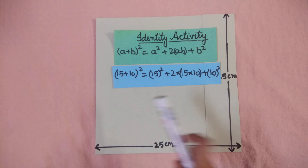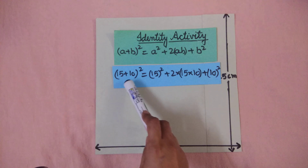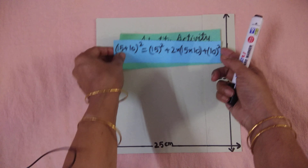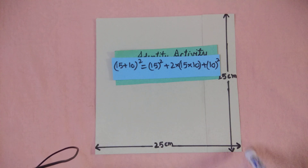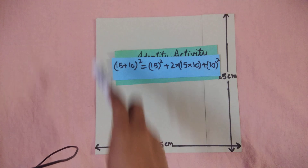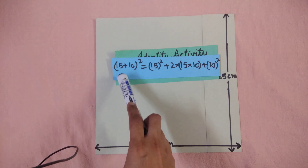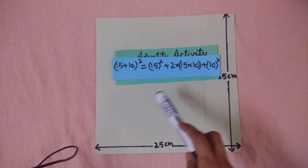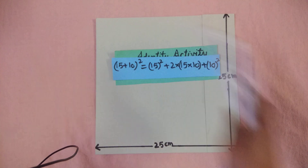Here, 15 plus 10 added together gives 25, so we get 25 squared. That means you have to take one piece of a 25 by 25 square. So here I have taken one cutout of 25 by 25.